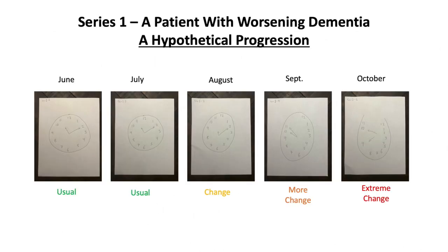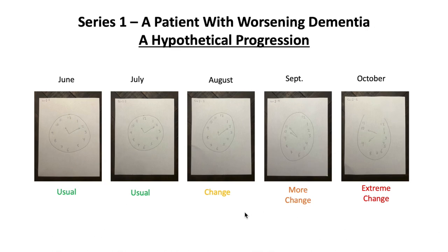Let's talk about a hypothetical case of worsening dementia. Here is a series of clocks drawn once a month, starting in June, July, all the way to October. In June and July the clocks are normal. But in August we begin to see changes, and these changes worsen in September. Eventually in October, the patient is drawing very odd clocks. In reality, the timescale to get from the left to the right might be many months, but for convenience I've labeled them as six months.